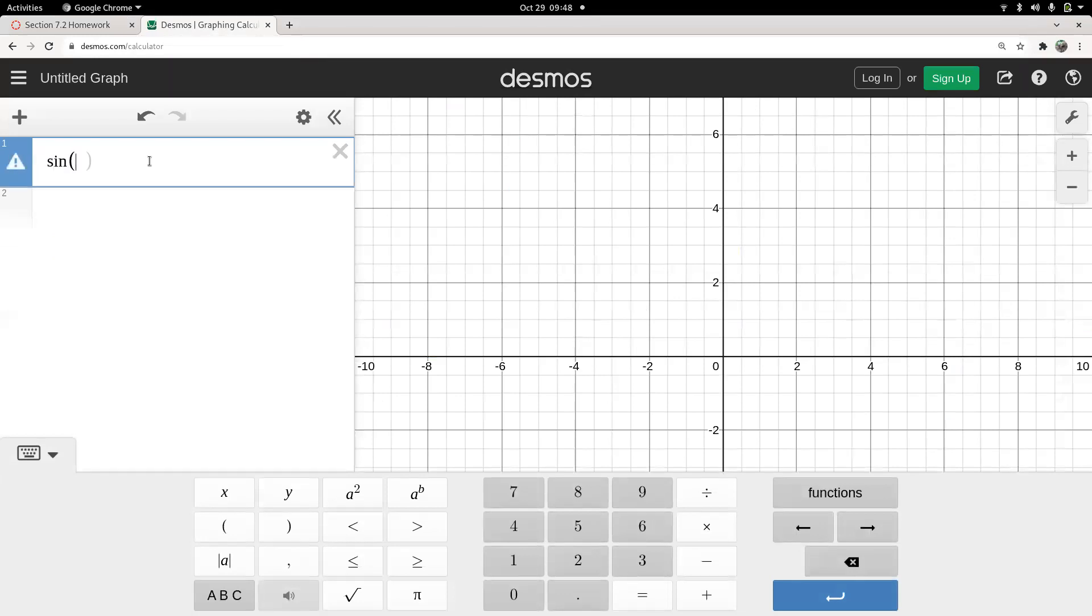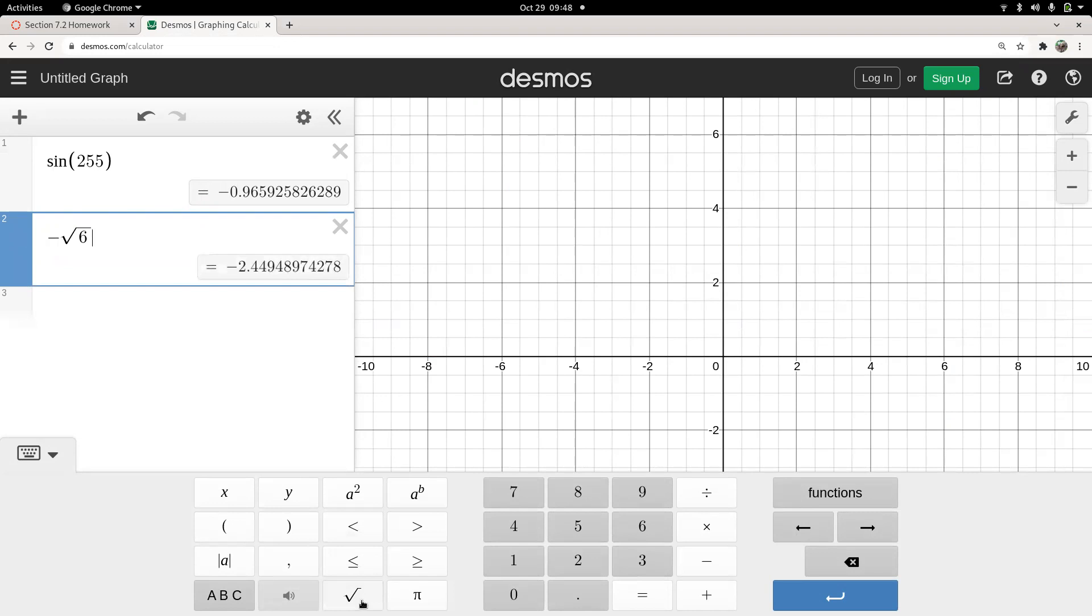And I want to compare the sine of 225, no 255, to that number I just calculated. So that was negative square root of 6, then over 4, minus the square root of 2, also over 4. And they are the same number. So it looks like I made the right calculation there.